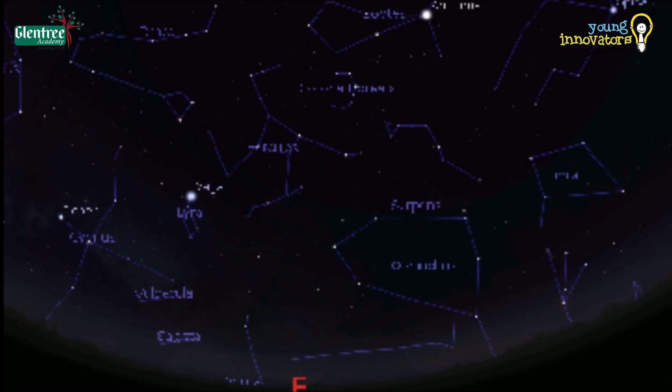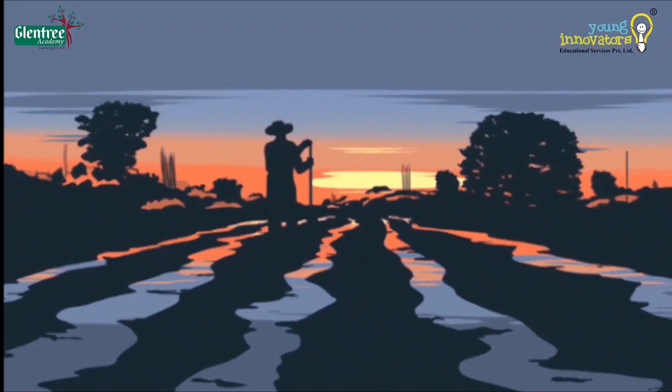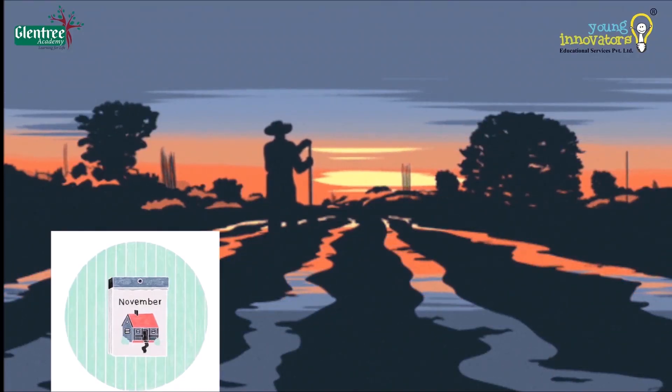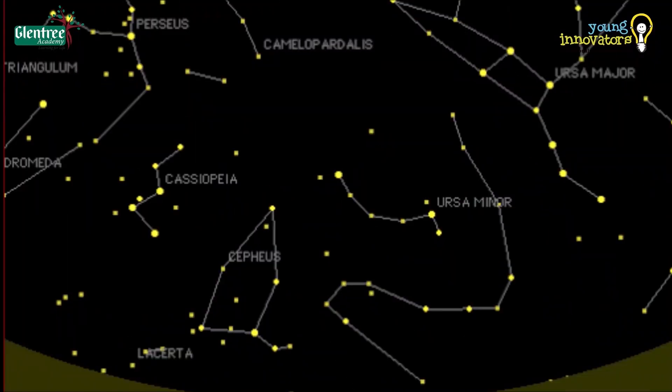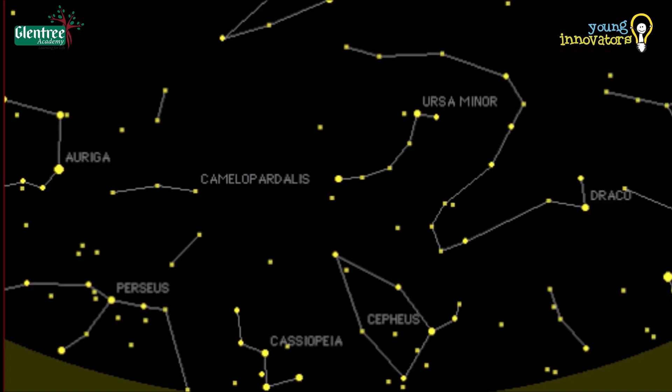Many such constellations were looked upon for various purposes like agriculture, calendar, time, seasons, etc., because the constellations vary over a period of three months.